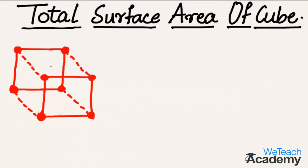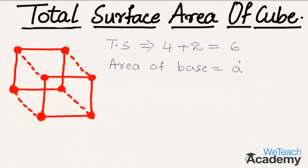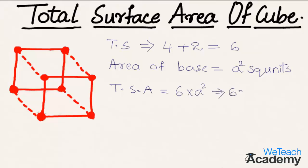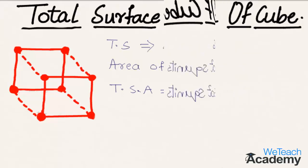First, let us find the total number of surfaces of the cube. A cube has four lateral surfaces plus two more — the top and the bottom — giving us six total surfaces. The area of each face (the base) is a² square units, so the total surface area of a cube is six times a², which equals 6a² square units.